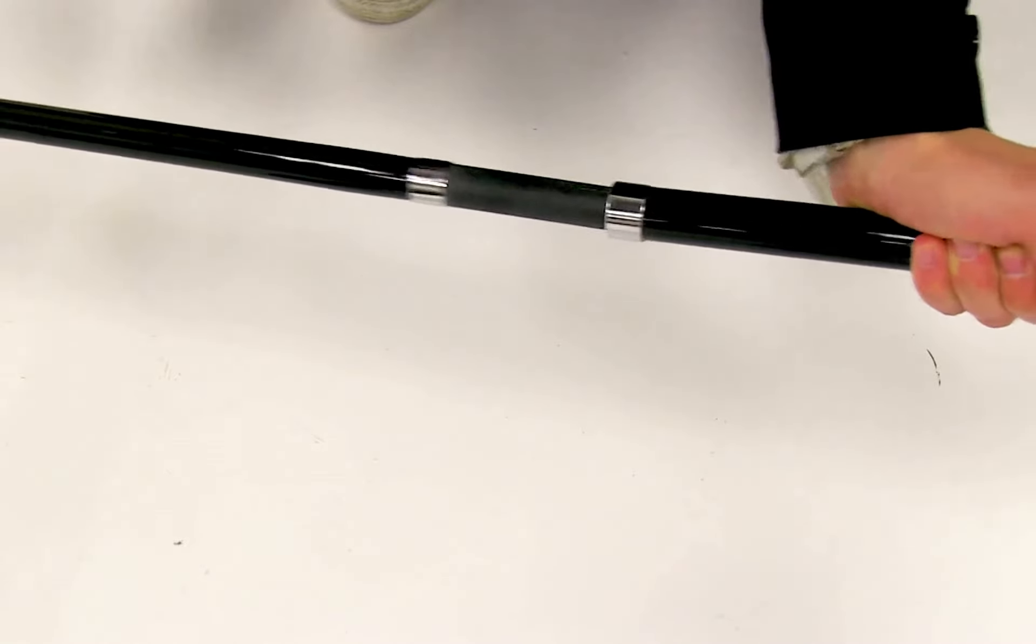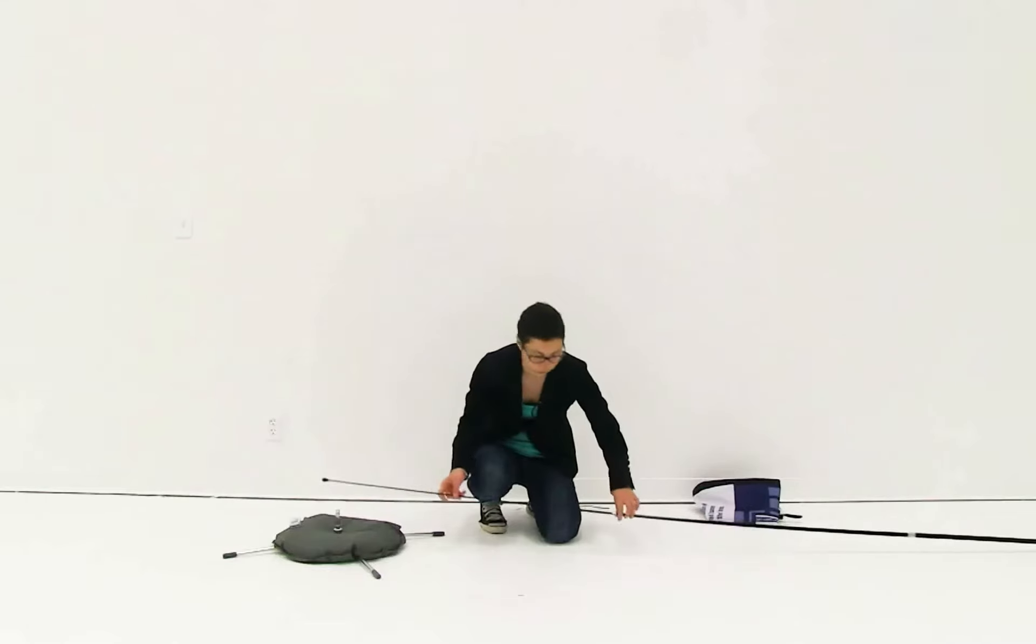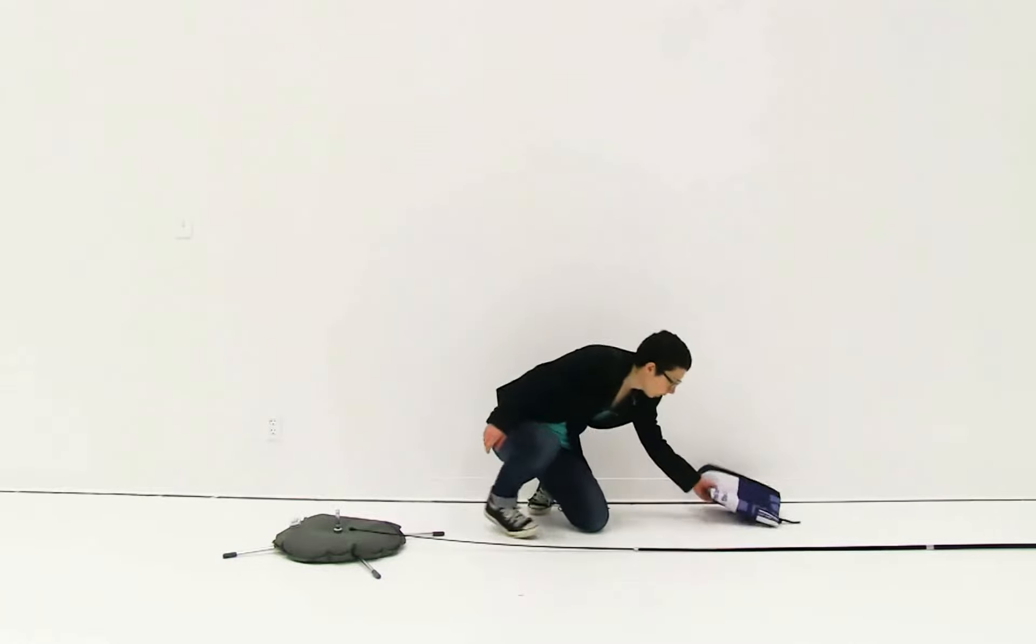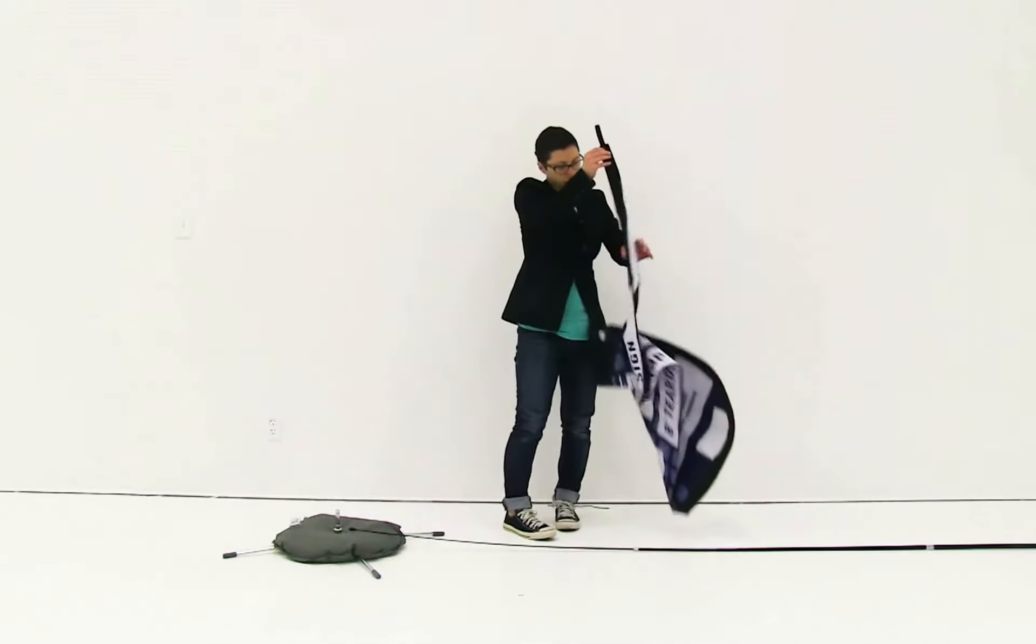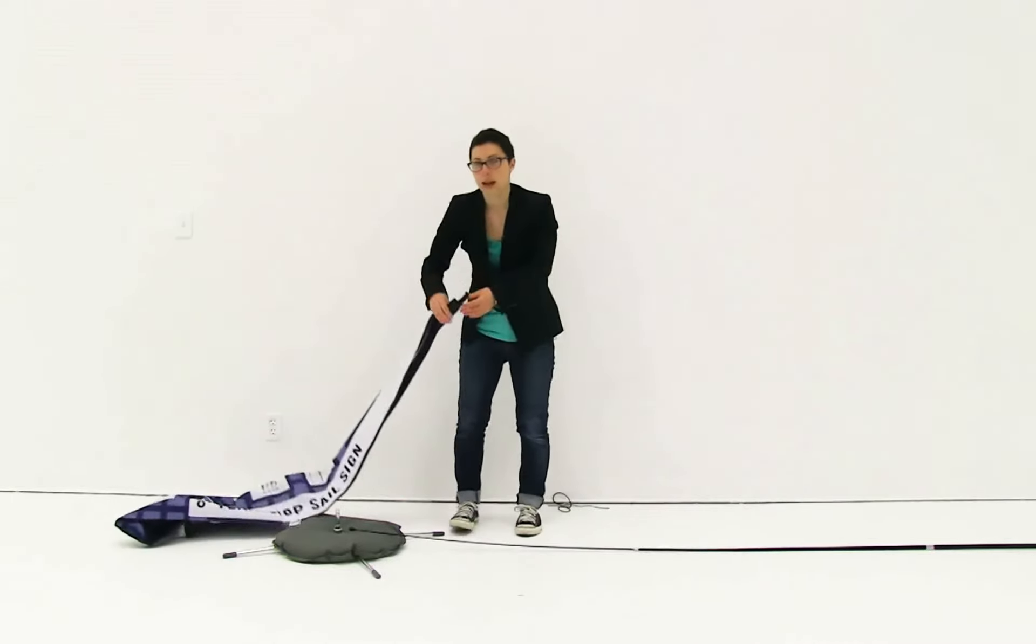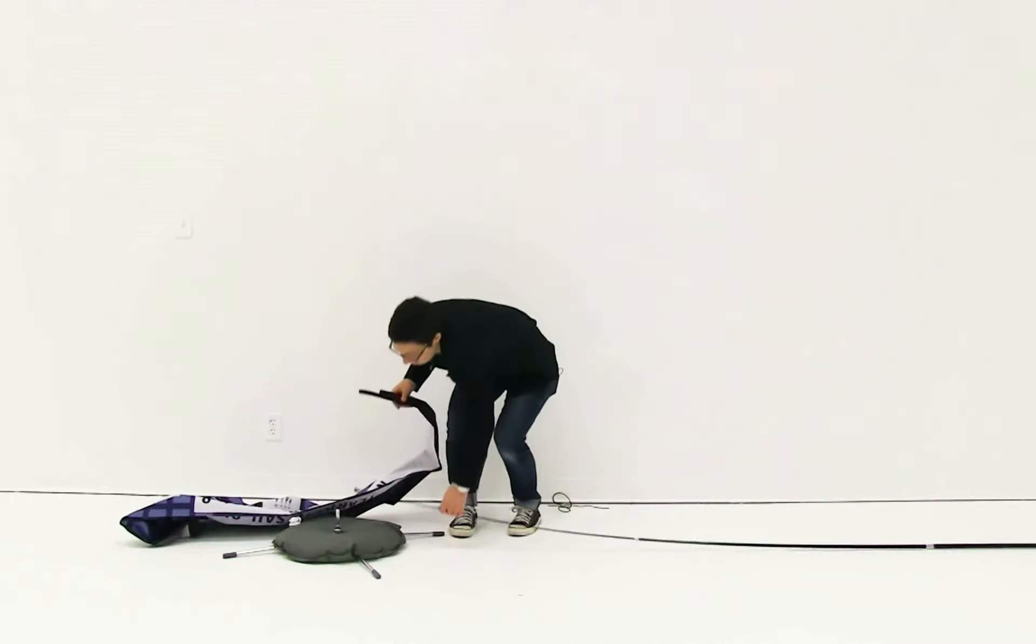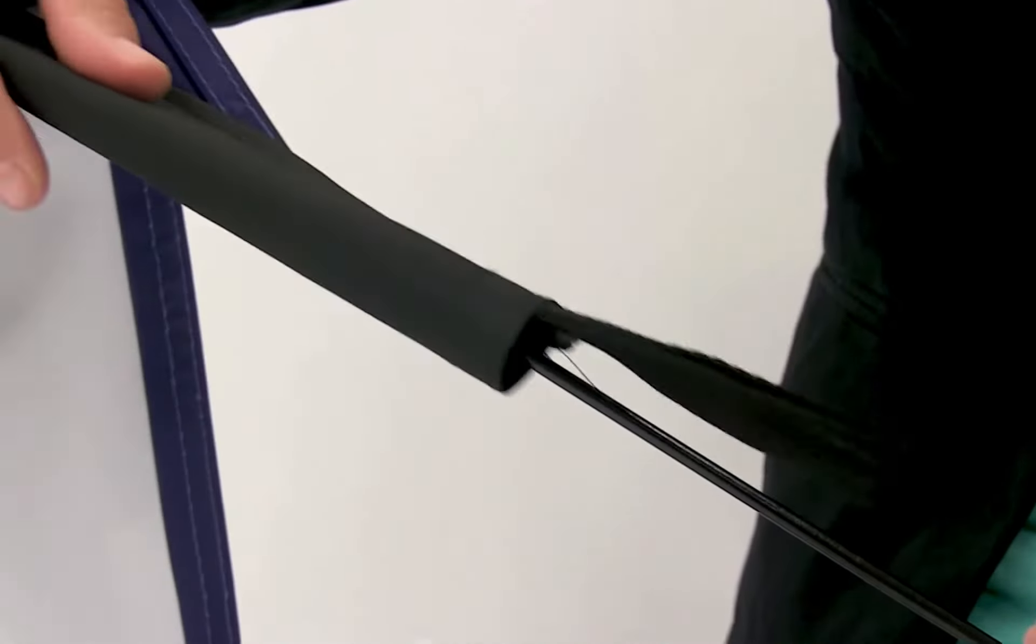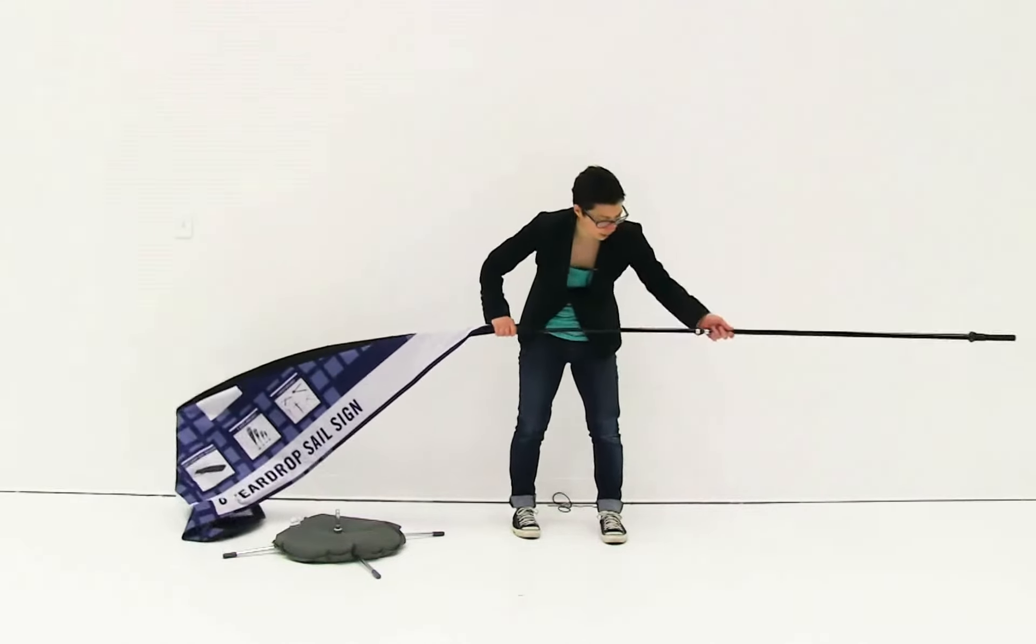Next thing I'm going to do is attach the graphic to the poles. Using the pole pocket on the graphic, I'm just going to slide it onto the end of my pole. You're just going to fully slide the graphic on.